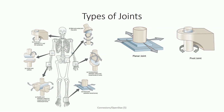Pivot joints are formed by a cylindrical bone mass enveloped by bone and ligament. The cylindrical surface allows rotation between the two bony surfaces. As this is the only motion allowed within pivot joints, they are considered uniaxial.